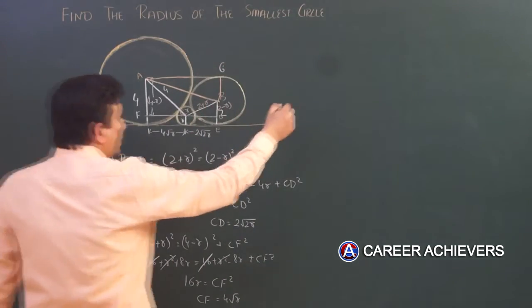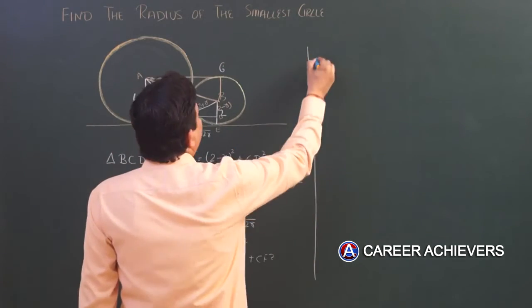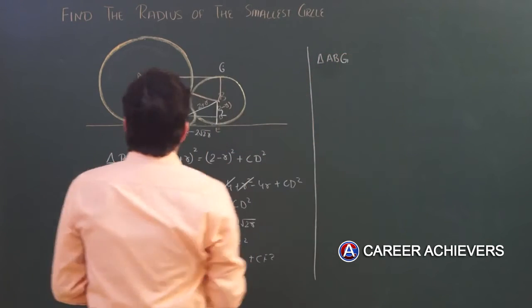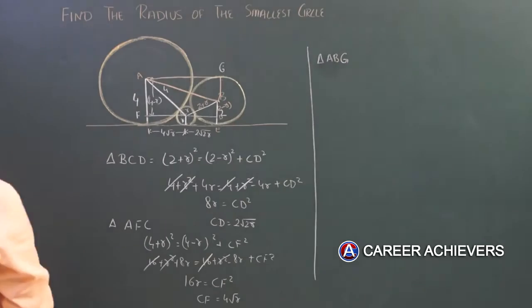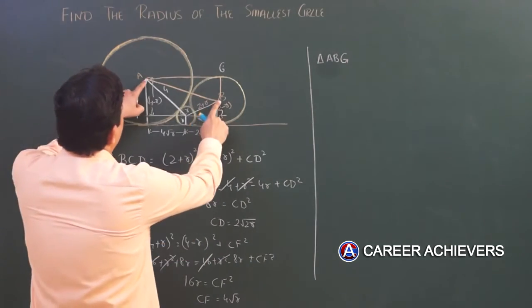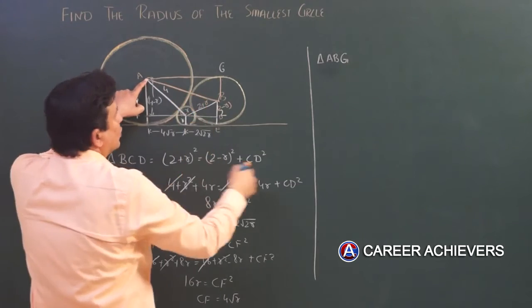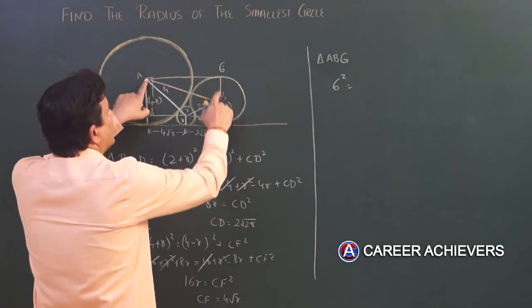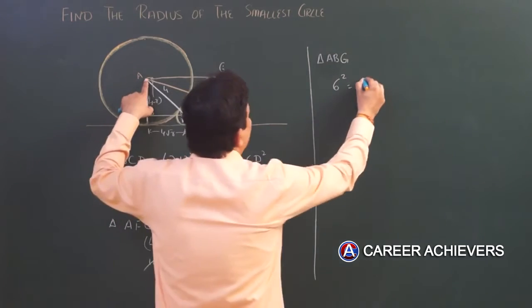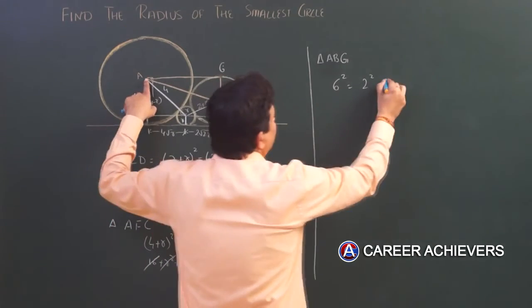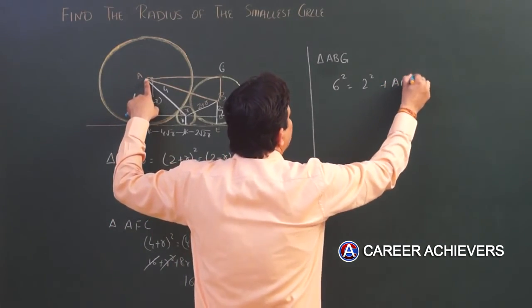Now what will be the third and final step? Look at this. G, triangle ABG, look at this. In this, this whole part will be how much? 4 plus 2 equals 6. So 6² equals 2² plus AG².